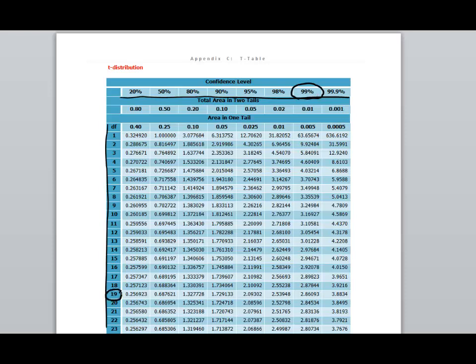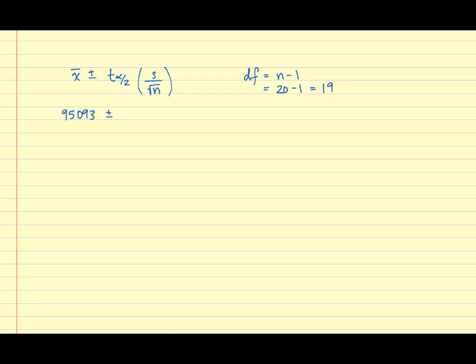So we're going to locate the T critical value that corresponds to this intersection. So with 19 degrees of freedom and trying to be 99% confident, our critical value is 2.86093. So we're going to plug this value into our formula.